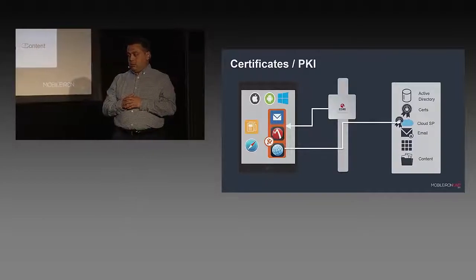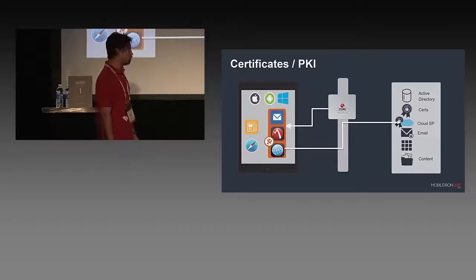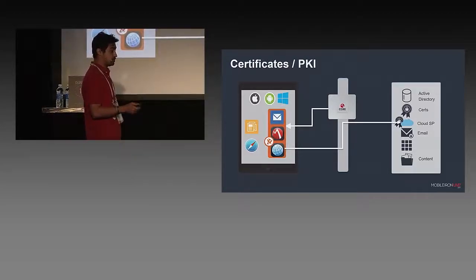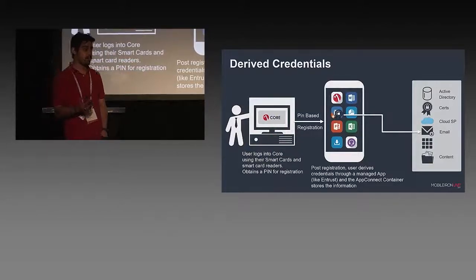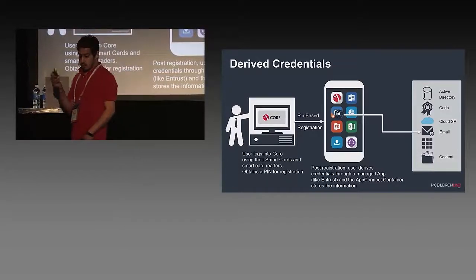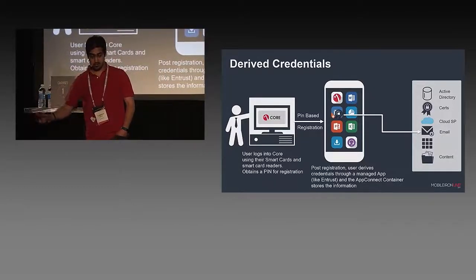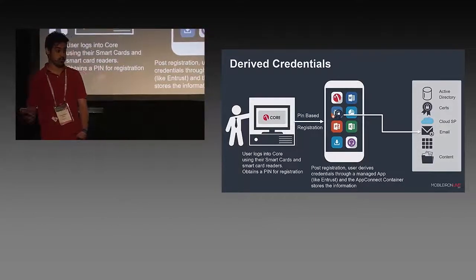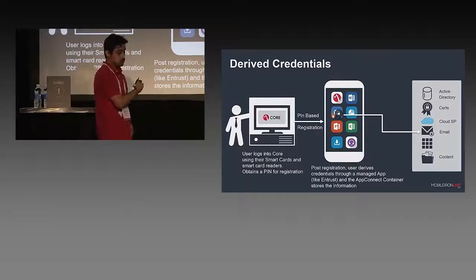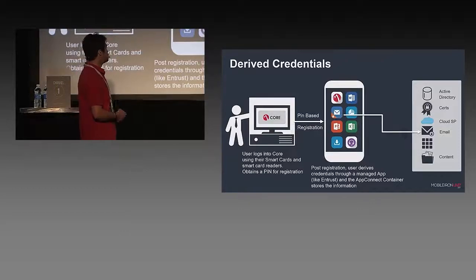This is active auth — your application directly talking to your service provider, on-premise or cloud. The challenge is your app has to support certificates. For federal and financial sectors, derived credentials is a great solution: a user derives credentials using their smart card, registers the device using a PIN obtained via cert-based auth on Core's user portal, logs into the portal, derives a PIN, and registers their device without needing passwords. Once the device is registered, a derived credential in the app container is used for cert-based auth.